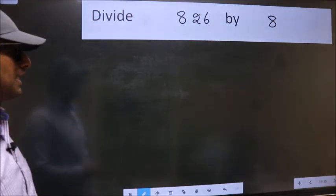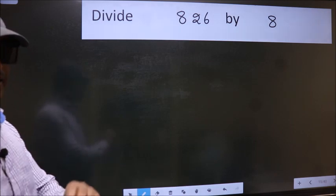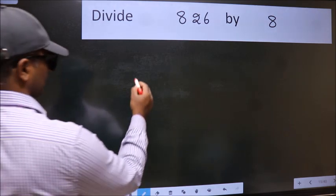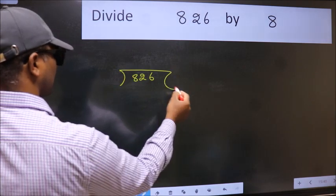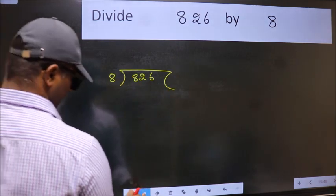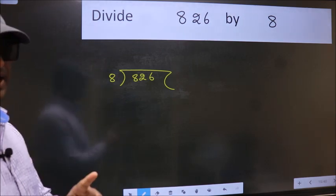Divide 826 by 8. To do this division, we should frame it in this way: 826 here, 8 here. This is your step 1.